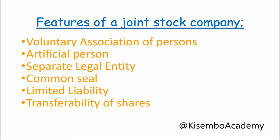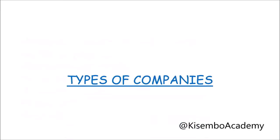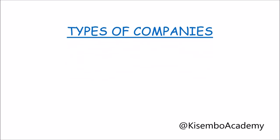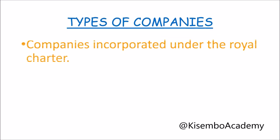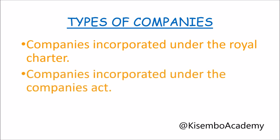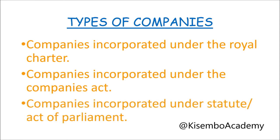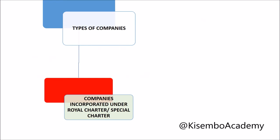Then there is perpetual succession — a company enjoys continuous existence. Its life is not affected by the death, retirement, or insolvency of its members. A member can choose to leave and the company will still remain operating. Looking at types of companies, we classify them under their nature and origin. We have companies incorporated under the royal charter or special charter, companies incorporated under the Companies Act, and companies incorporated under the statute or Acts of Parliament.